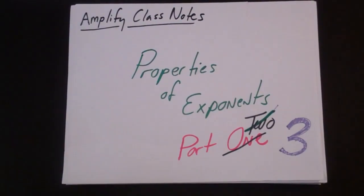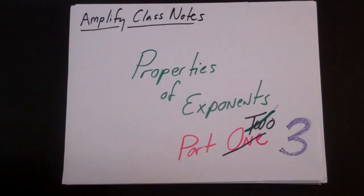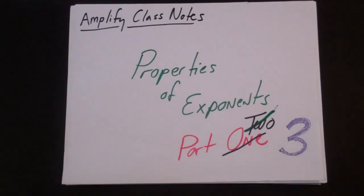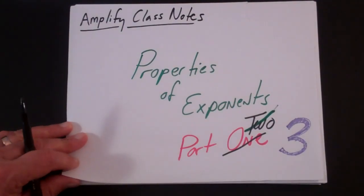This is the third in a series of three video lectures on properties of exponents. The first went over the rules and the second went over some simple examples. In this third one, we'd like to go over some examples that are a little more complicated, specifically examples with negative exponents.